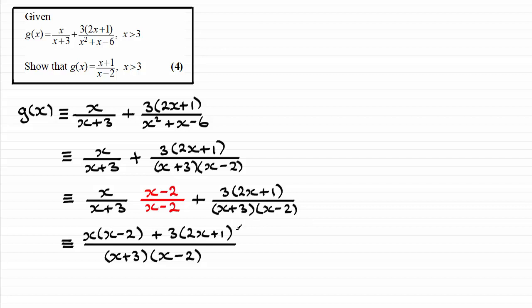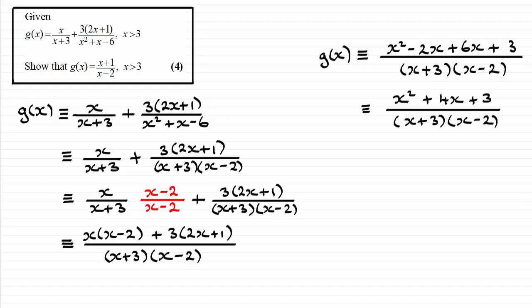OK, so next I just need to expand the brackets on the top. Doing that you should find that you get x squared minus 2x plus 6x plus 3. Then I need to just group up my terms here on the top and I get x squared plus 4x plus 3.